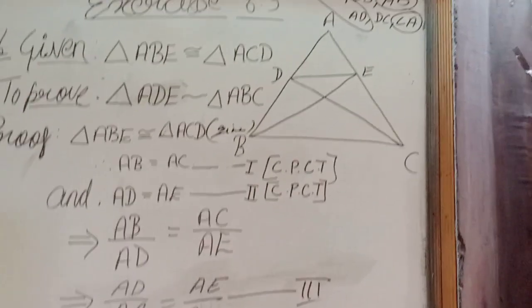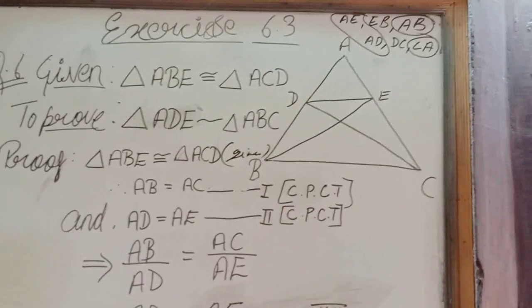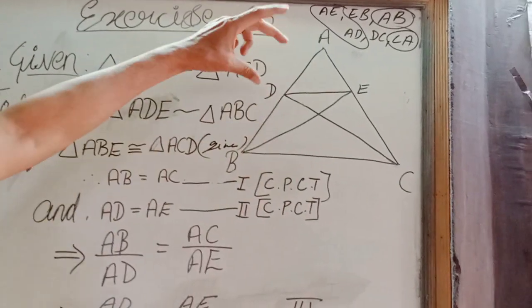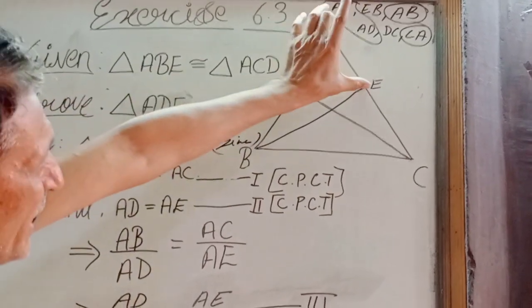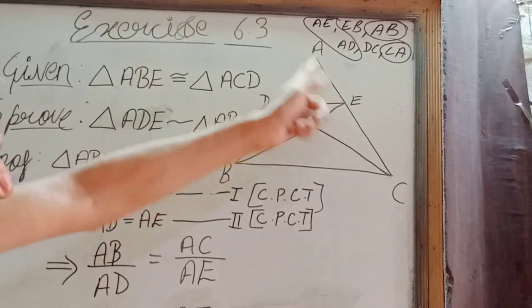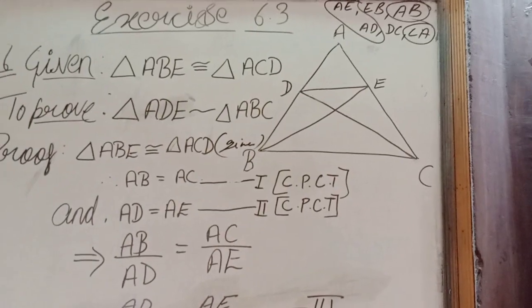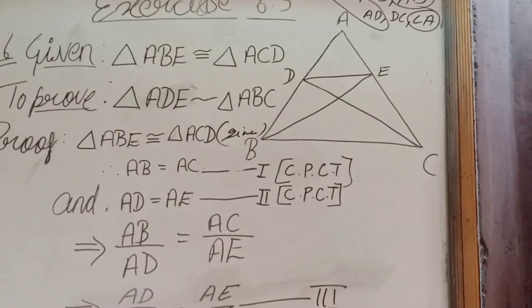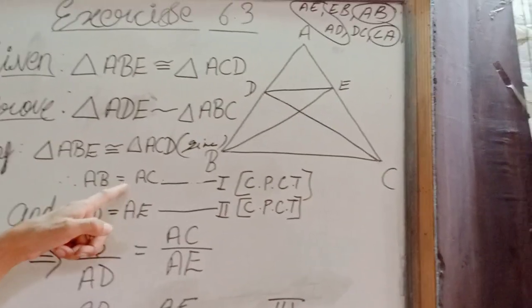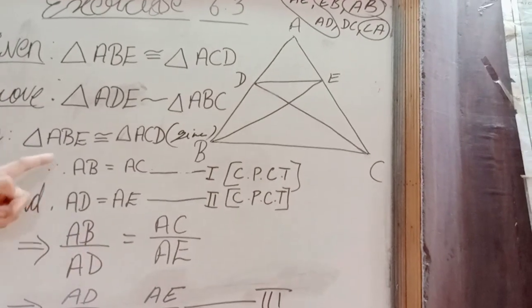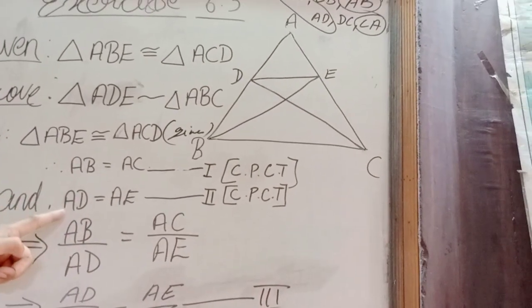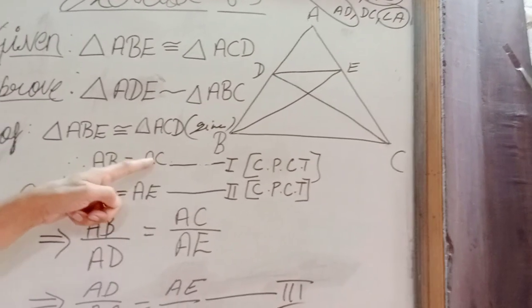Therefore, by CPCT we have AD upon AE and AB upon AC. Or by dividing equation 1 by 2, we get AB upon AD is equal to AC upon AE.